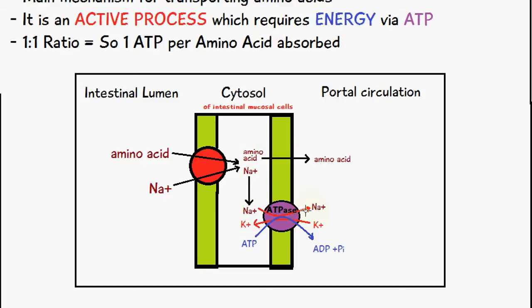The sodium ion is pumped out via the ATPase pump and the potassium ion is pumped inwards. This requires energy via ATP, so ATP is converted into ADP and inorganic phosphate.